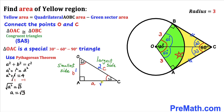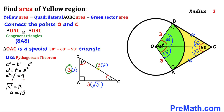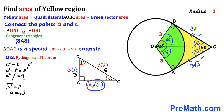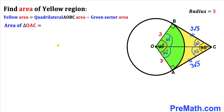Since our OA side is 3 units, we multiply all sides by 3. So OA = 3 units, OC = 6 units, and AC = 3√3 units. Therefore, side AC is 3√3, and since BC is congruent to AC, side BC is also 3√3.